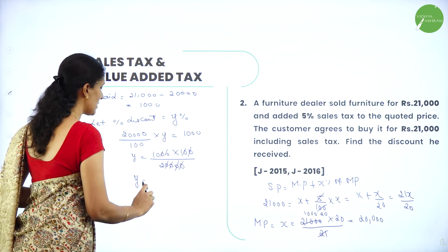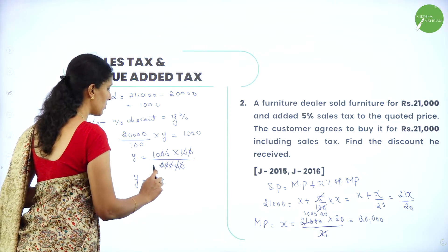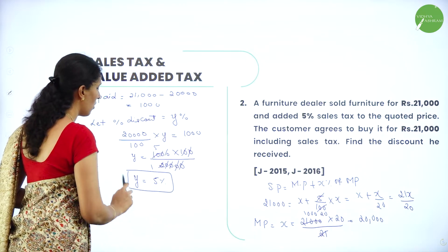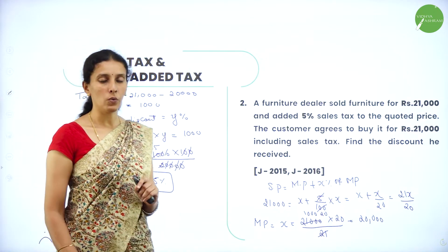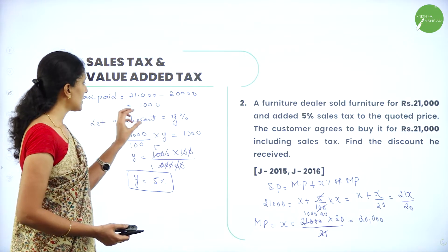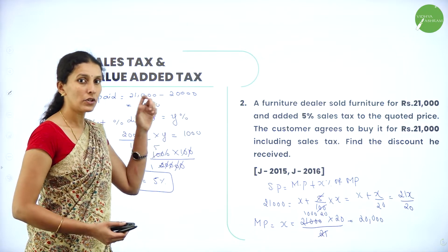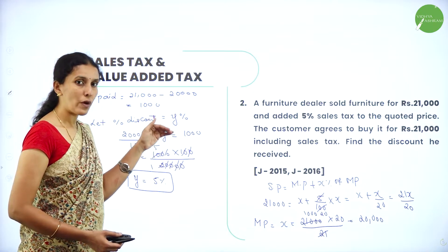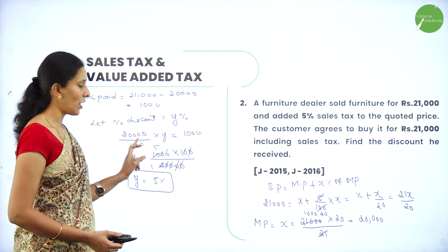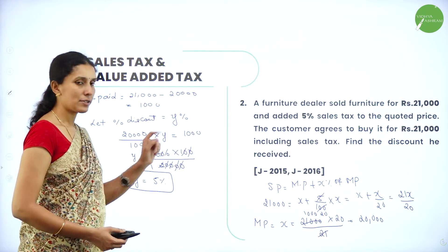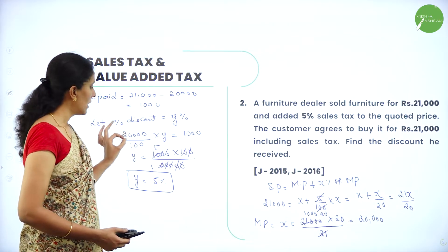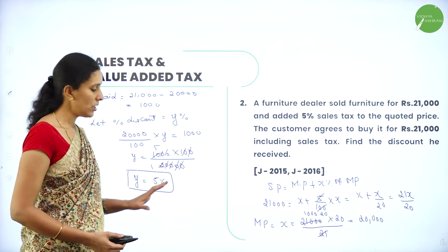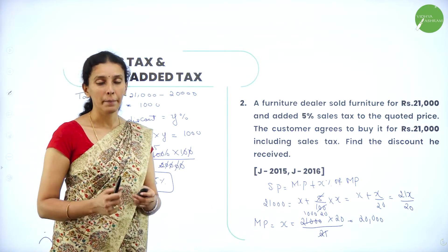After cancelling we get y equals 5 percent. The discount is y percent on the market price, which is y divided by 100 into 20,000, equal to the tax paid by the customer. Hence the discount equals the tax paid, and the rate of discount is 5 percent.